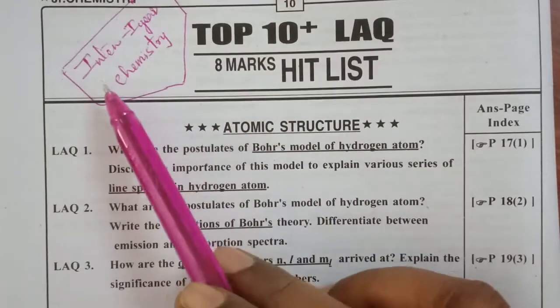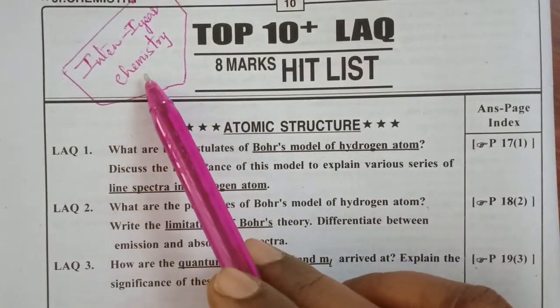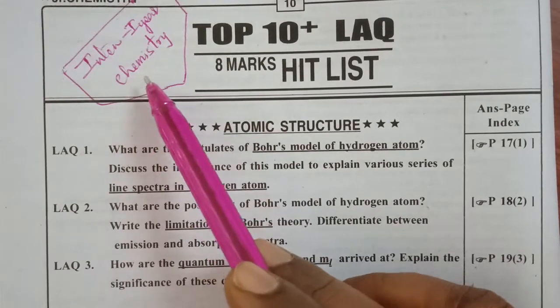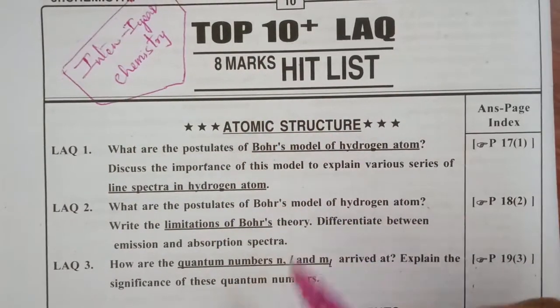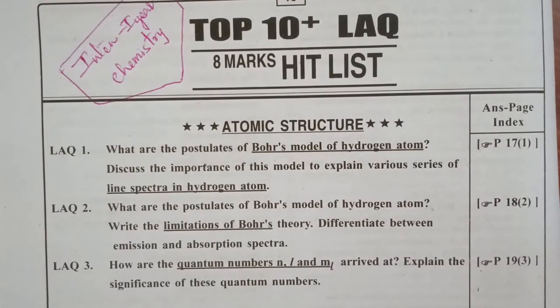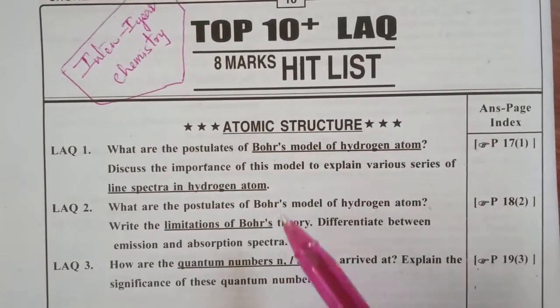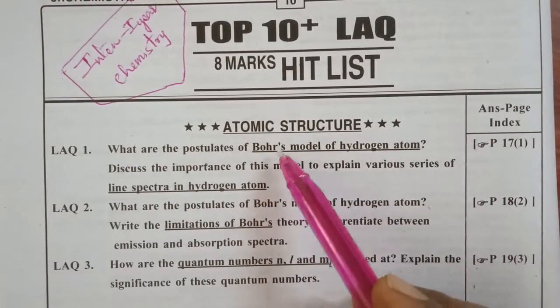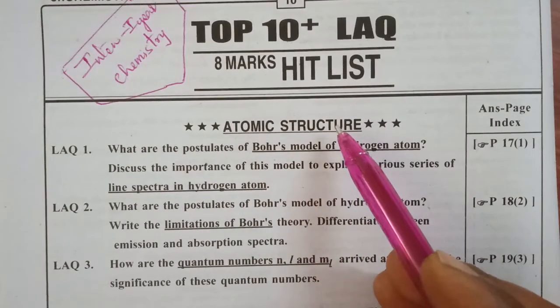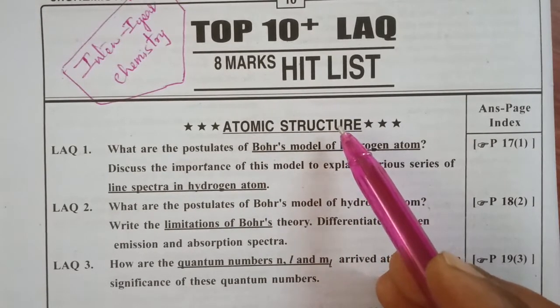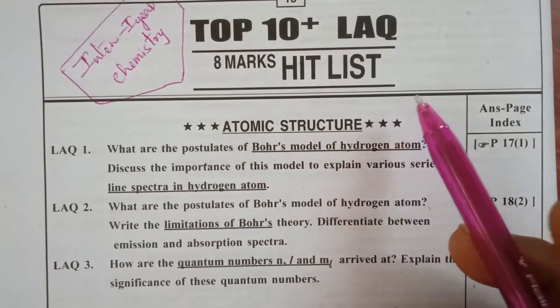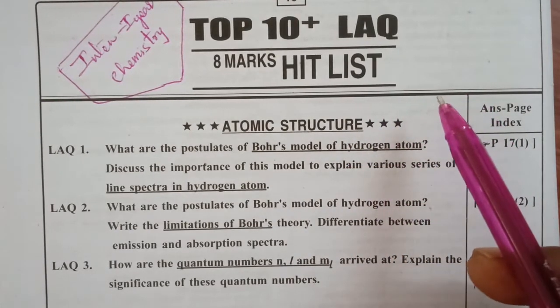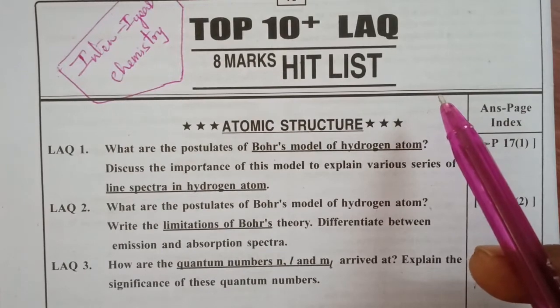So this is for intermediate first year chemistry. 8 marks hit list chapter wise today I would like to project you. There are 3 chapters: Atomic Structure, Classification of Elements, and Chemical Bonding or Organic Chemistry.